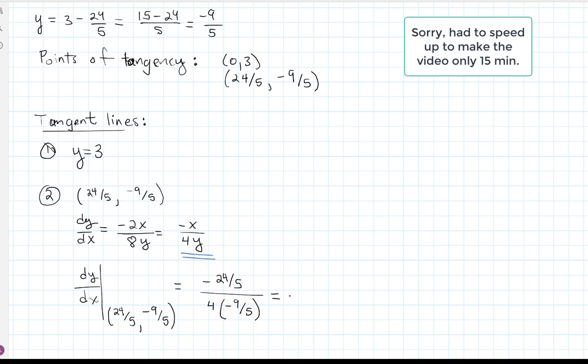So the one-fifths cancel. I got a factor of four that I can cancel as well, leaving me with a six on top and a nine on bottom. So this is a positive slope, which I was expecting as well. Then the equation of the tangent line using point slope form would be y minus a negative nine-fifths equals, well let's reduce that, two-thirds x minus 24 over five. So here are my two tangent lines, y equals three, and this one right here.